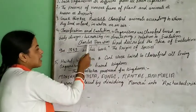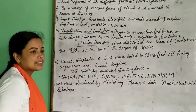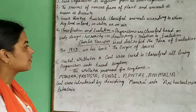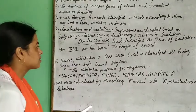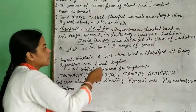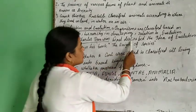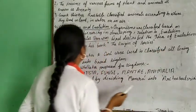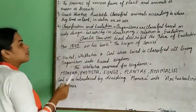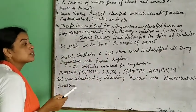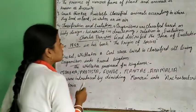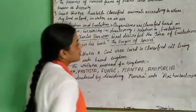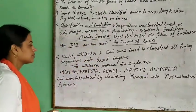Charles Darwin was the first to classify animals into kingdoms. He described the idea of evolution in 1859 in his book, whose name is The Origin of Species.